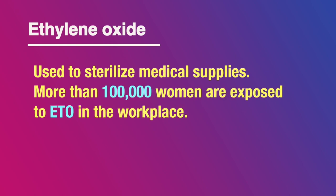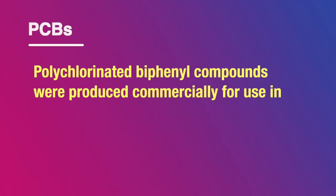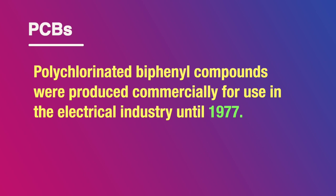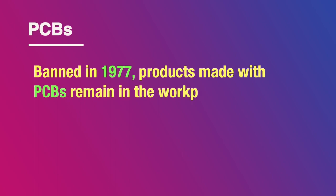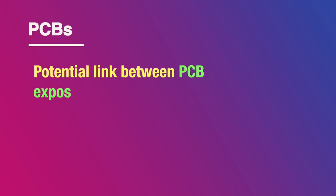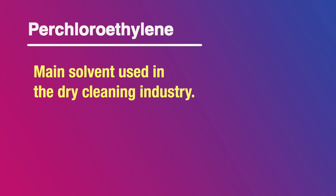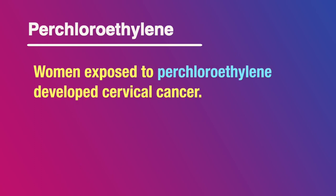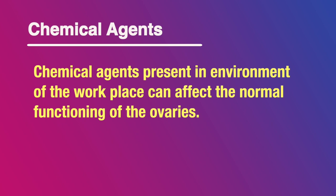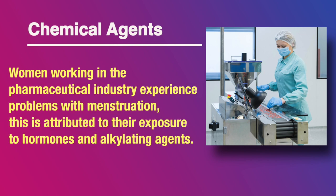Ethylene oxide (ETO), used to sterilize medical supplies, has exposed more than one lakh women in their workplace, especially in hospital and healthcare sectors. Polychlorinated biphenyls (PCBs) were produced commercially for use in the electrical industry until 1977, when they were banned. Since PCBs are persistent compounds, they still remain in the workplace and environment; a potential link between PCB exposure and breast cancer has been reported. Similarly, perchloroethylene — the main solvent used in the dry cleaning industry — has been linked to cervical cancer development in exposed women. In some countries, 62 percent of the workforce in dry cleaning agencies are women workers.